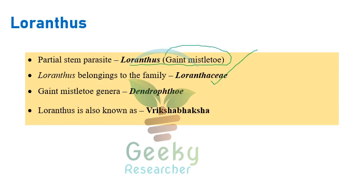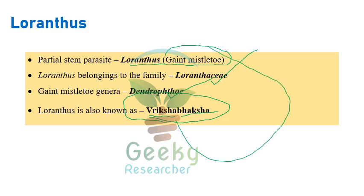Loranthus, the partial stem parasite, belongs to family Loranthaceae. Other names are giant mistletoe and Dendrophthoë. Loranthus is also known as 'Vriksha Bhaksha' - a Sanskrit word where Vriksha means plant and Bhaksha means eater - because it slowly eats the plant by producing haustoria inside the plant and sucking nutrients.